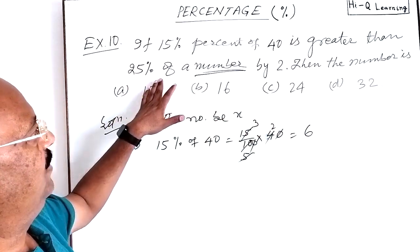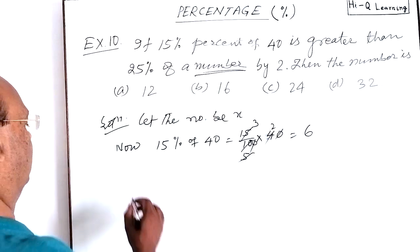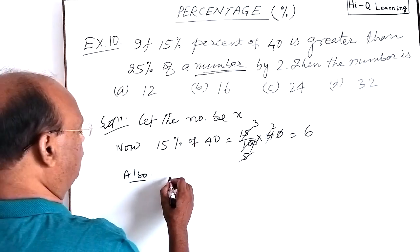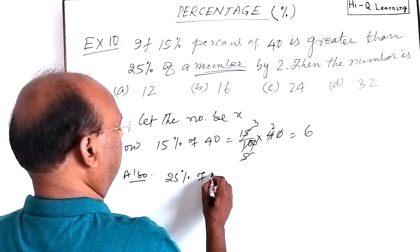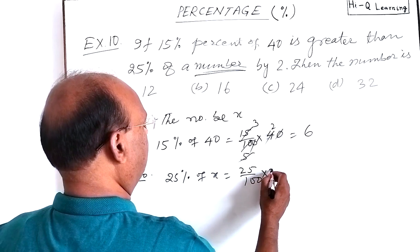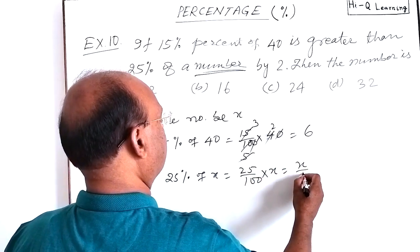Next, let us find 25% of our number. The number is X. So also 25% of X will be how much? 25 by 100 into X. This is cut to X by 4.